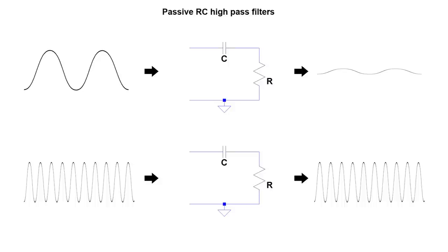Well, high-pass filters are almost exactly the same. Just swap the position of the resistor and the capacitor. Now the high-pass frequencies pass through unchanged, and the low frequencies get attenuated.